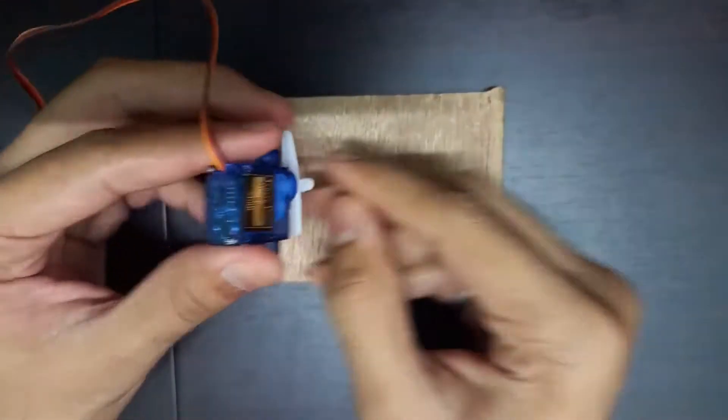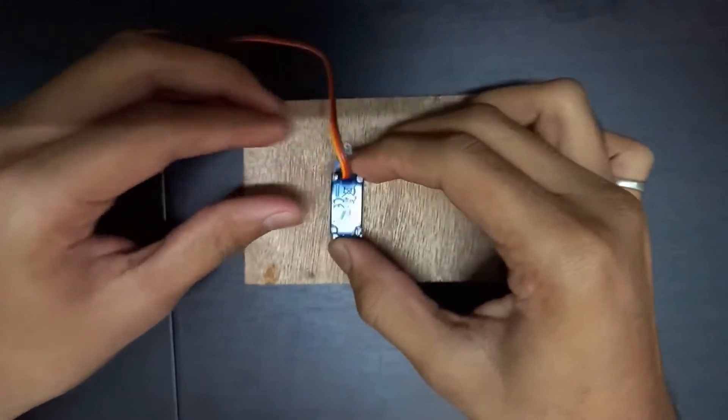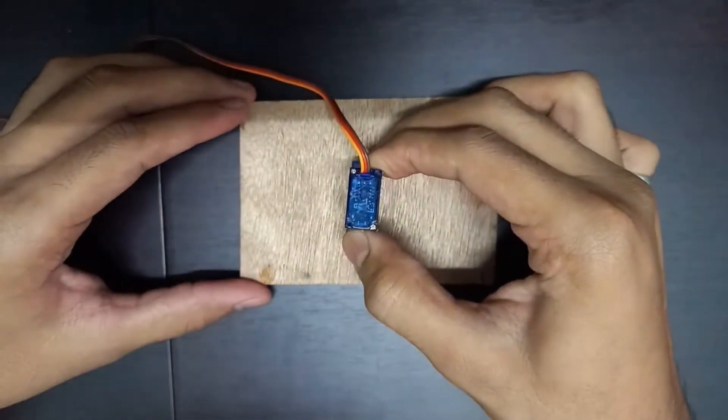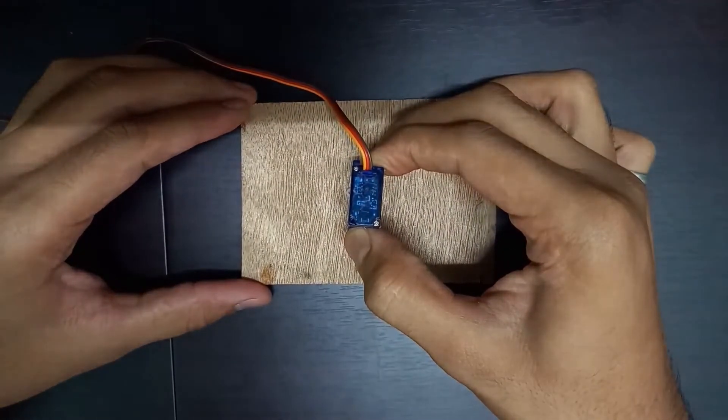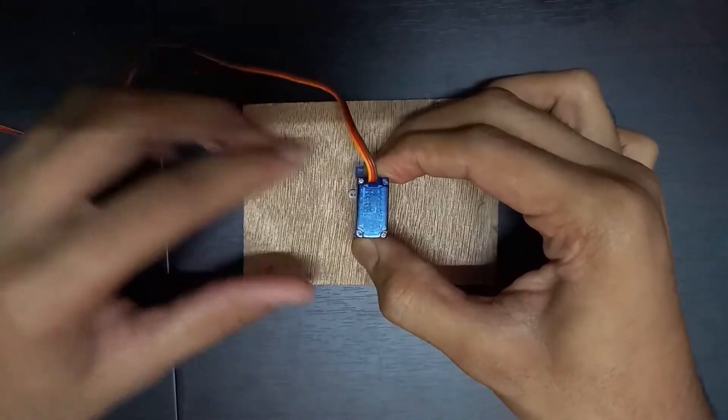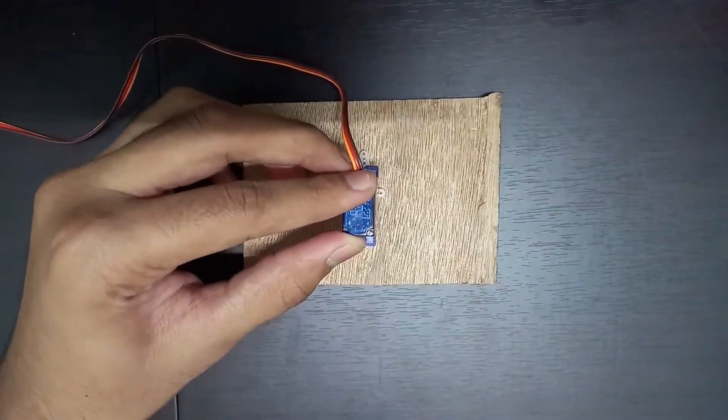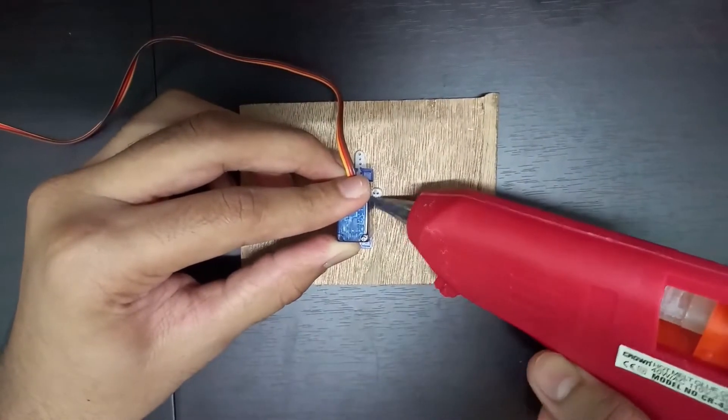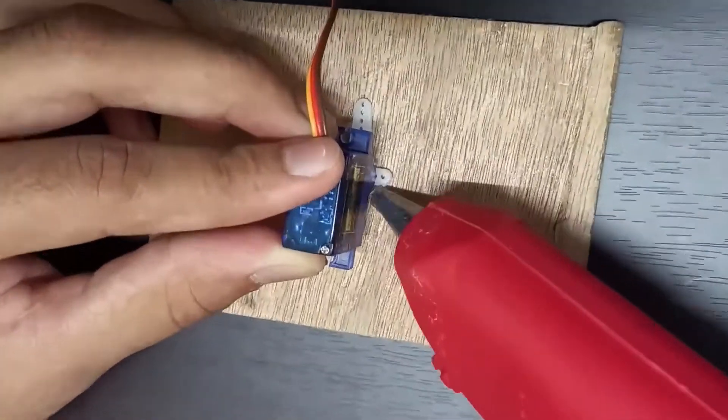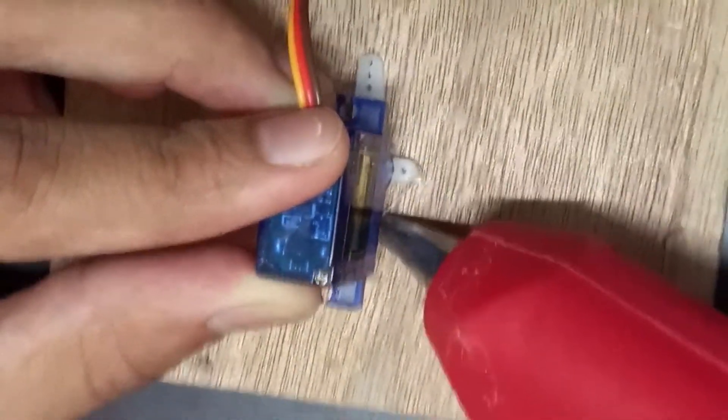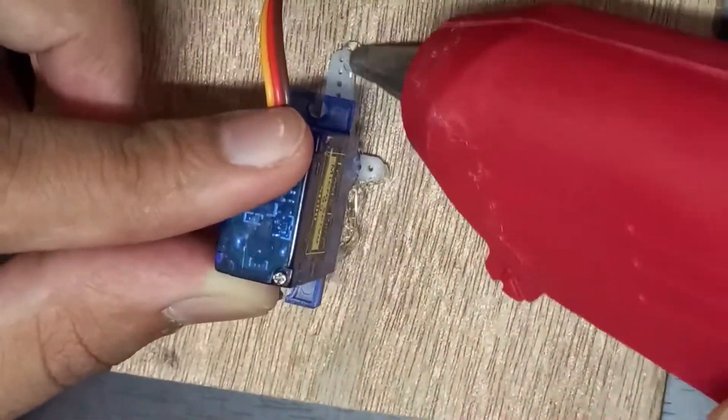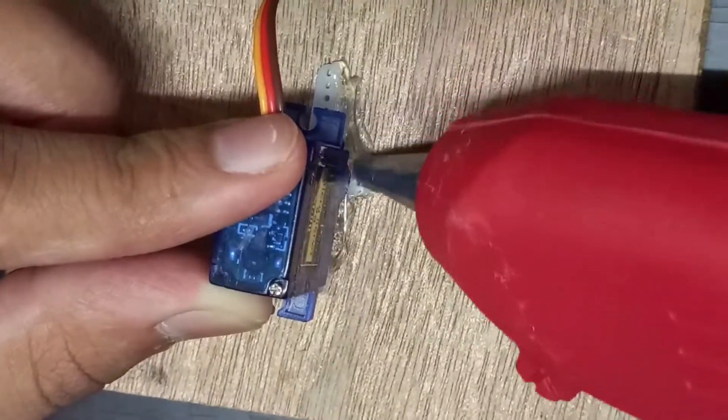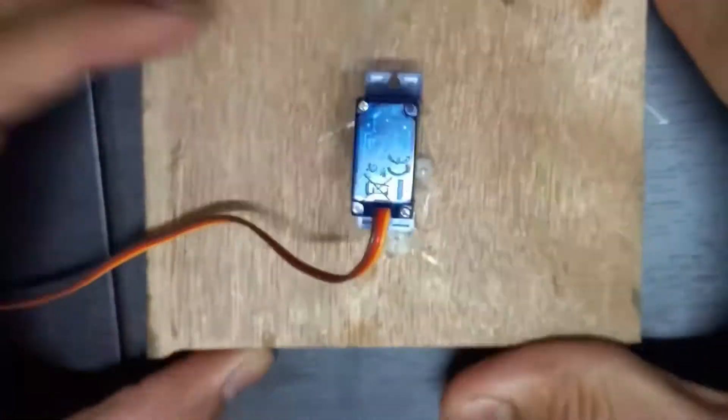Now take one servo motor for base movement and place it upside down on the plank. With the use of powerful glue, we will stick it on the wood. Glue it firmly for the stableness of the arm as there will be load only on the base servo motor.